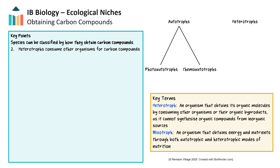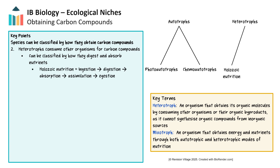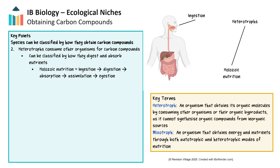Heterotrophs obtain energy-rich carbon compounds by consuming other organisms or their organic byproducts. They can be further classified based on how they digest and absorb nutrients. Holozoic nutrition involves ingestion — taking food into the organism — then digestion, or breaking down large carbon compounds into monomers, for example starch into glucose, followed by absorption, or transporting monomers across membranes into the organism, after which assimilation occurs, or using those monomers to build new polymers.